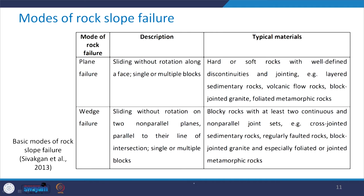Some descriptions and typical materials correspond to each mode of rock failure. For plane failure, sliding without rotation takes place along a plane, and there can be single or multiple blocks. Hard or soft rocks with well-defined discontinuities and jointing fall under this category — for example, layered sedimentary rocks, volcanic flow rocks, block jointed granites and foliated metamorphic rocks.